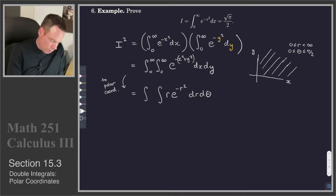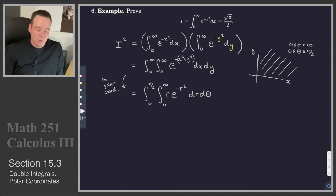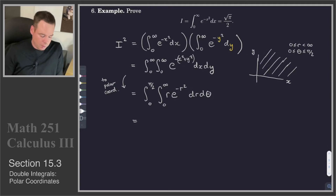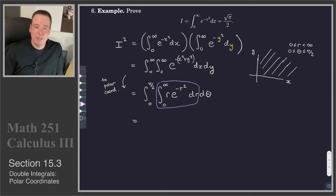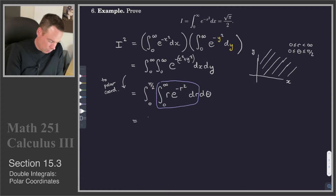r ranges over 0 to infinity, and theta goes from 0 to pi over 2. So that switch to polar coordinates now gets me an integral I can actually compute, because instead of evaluating e to the negative something squared, I've got the derivative of that something squared in front — I've got the r in there — so I can use a substitution. Also, this thing is completely independent of theta: there's no theta in the limits or the integrand. So this is constant relative to theta, which means I can split the integral into the theta part and the r part.